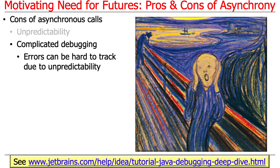Another tricky part about asynchrony is that debugging can often be a bit complicated, because it's often hard to track errors down when the system is behaving unpredictably. Things are happening in a somewhat unpredictable and asynchronous way, so you have to be prepared for how to debug programs that run unpredictably. Concurrent or parallel programs often have that characteristic, as do asynchronous programs.